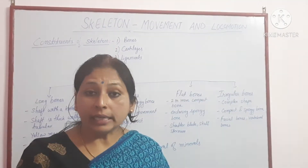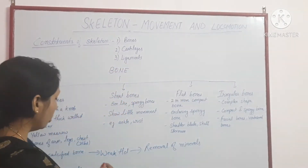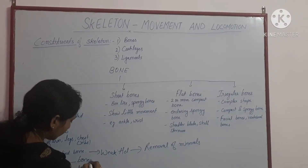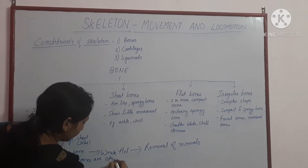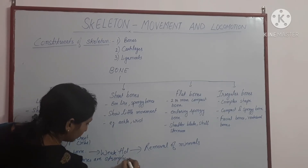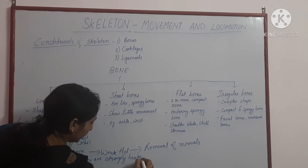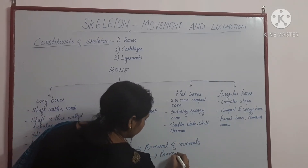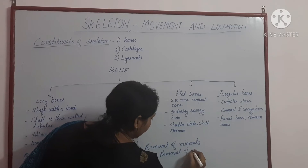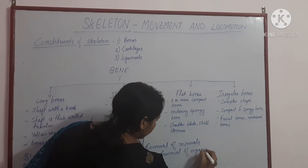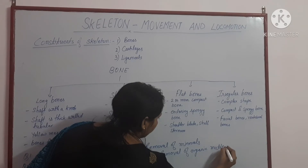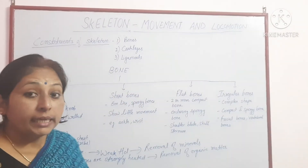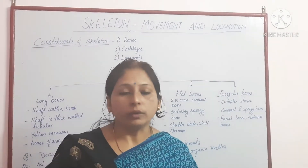Another question: how is bone ash formed? When bones are strongly heated, the organic matter is removed, and the bone becomes brittle and fragile. This residue is called bone ash.